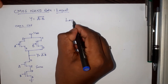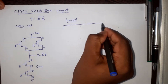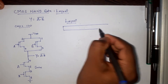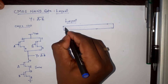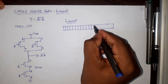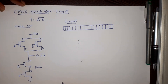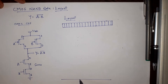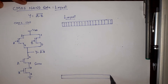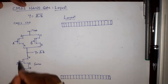Starting with the layout, first we need to draw a metal layer for the VDD connection. This is the metal layer representation — this is the standard representation we need to follow. This is VDD, and here I am going to draw one more metal layer for the ground connection. This also represents metal, but for ground. In between, I need to place the four transistors.